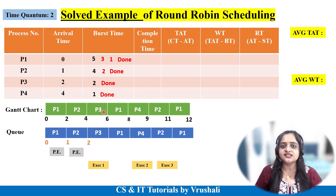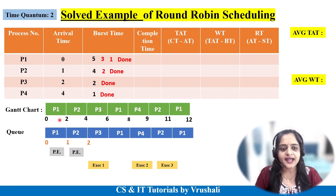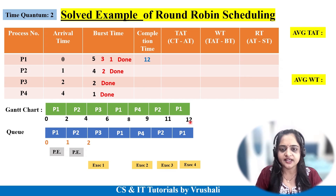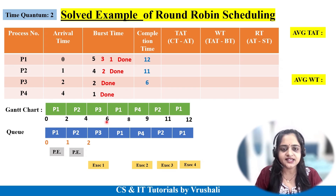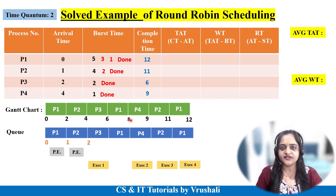This is the concept of round robin scheduling: every process gets a fixed time slot, and the CPU shares its time equally among all processes. Now, from the Gantt chart, find the completion times: P1 completion time is 12, P2 completion time is 11, P3 completion time is 6, P4 completion time is 9. The right side indicates completion time and the left side indicates arrival time.